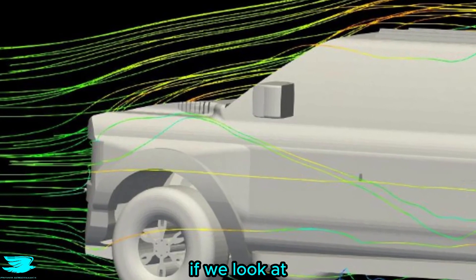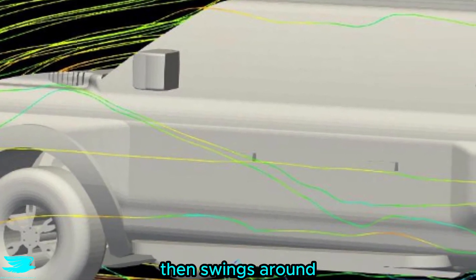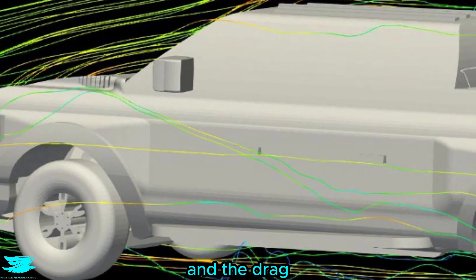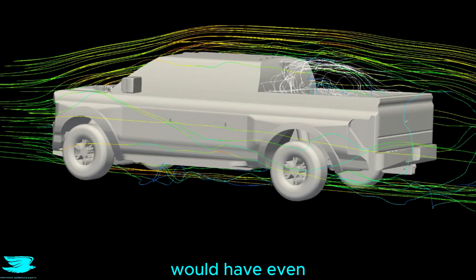One thing that could be improved is if we look at the front left, we see a streamline that goes over the hood, then swings around to the side of the car. That is usually going to increase the wake around the sides of the car and the drag. So if this bit of flow were better directed, then the car would have even better aerodynamics.